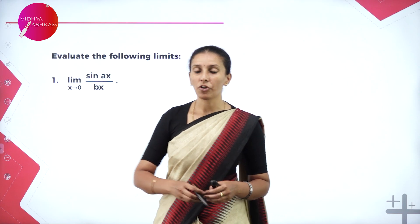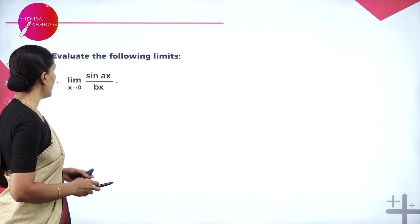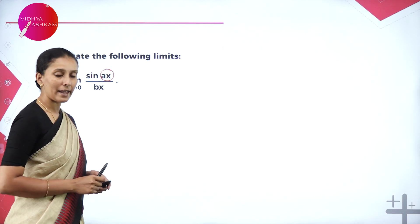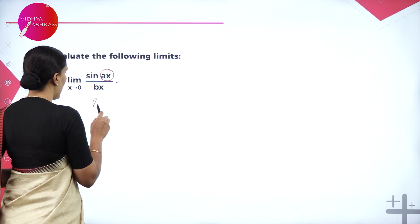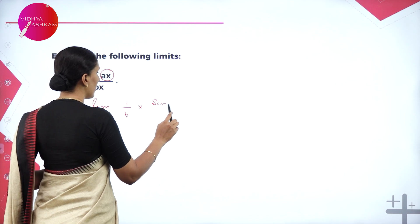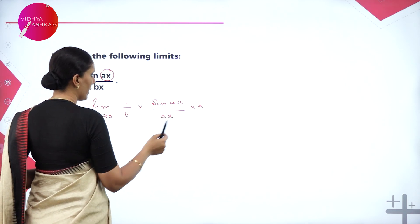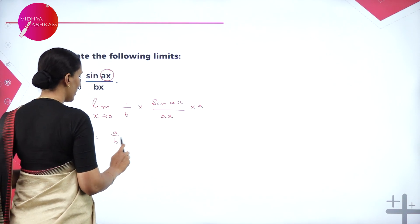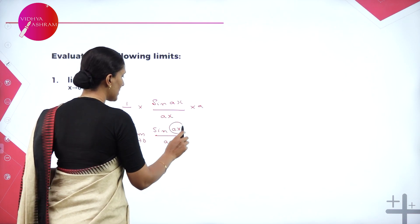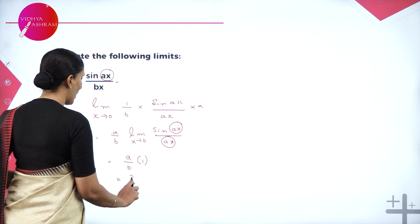Now we are going to evaluate the limits of some trigonometric functions using the proved theorem. For the limit as X approaches 0 of sin(AX) over BX, since we need the denominator to match the argument of sin, we write this as A over B times the limit of sin(AX) over AX. This is the standard result sin X over X whose value is 1, so the answer is A over B.